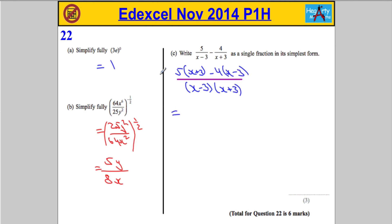Not done there. Let's expand out the numerator. So, we're going to get 5x plus 15 minus 4x plus 12. Draw your line. I'm going to leave the denominator alone for the time being. So, that's x minus 3 and x plus 3.